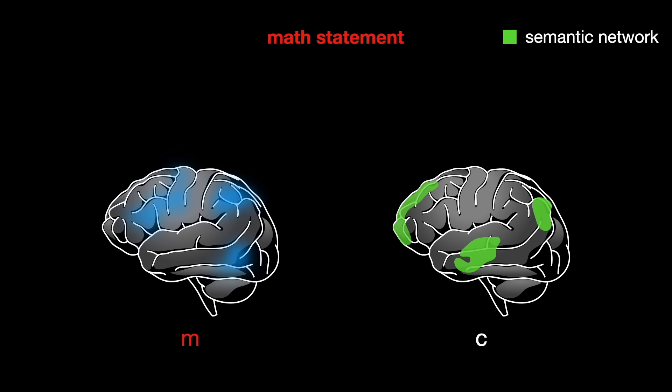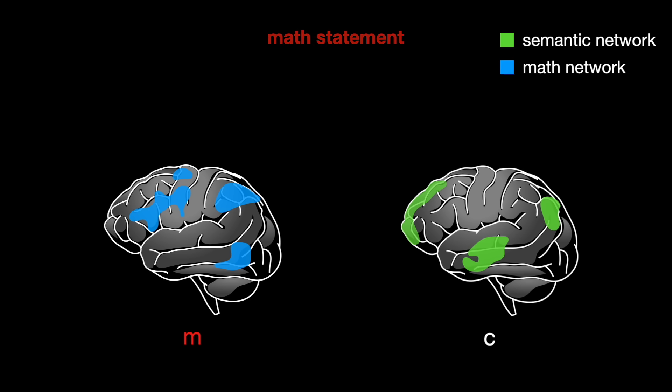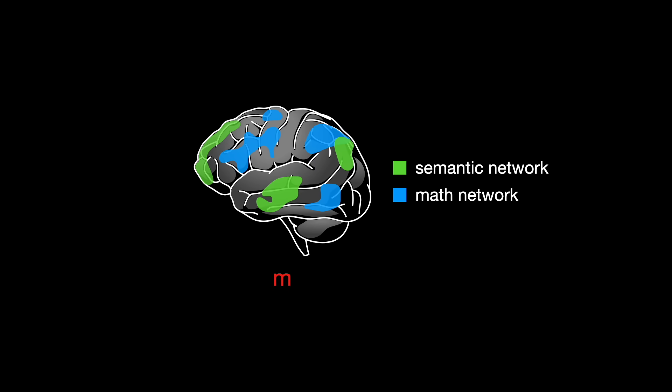When mathematicians thought about math statements, a different set of regions, which are shown in blue, the math-specialized network became active instead. The takeaway then is that mathematicians have a math-specialized network that is distinct from general semantic processing.